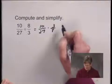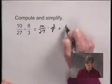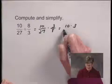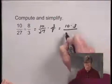Now we can multiply numerators, 10 times 3, and also multiply denominators, 27 times 8.